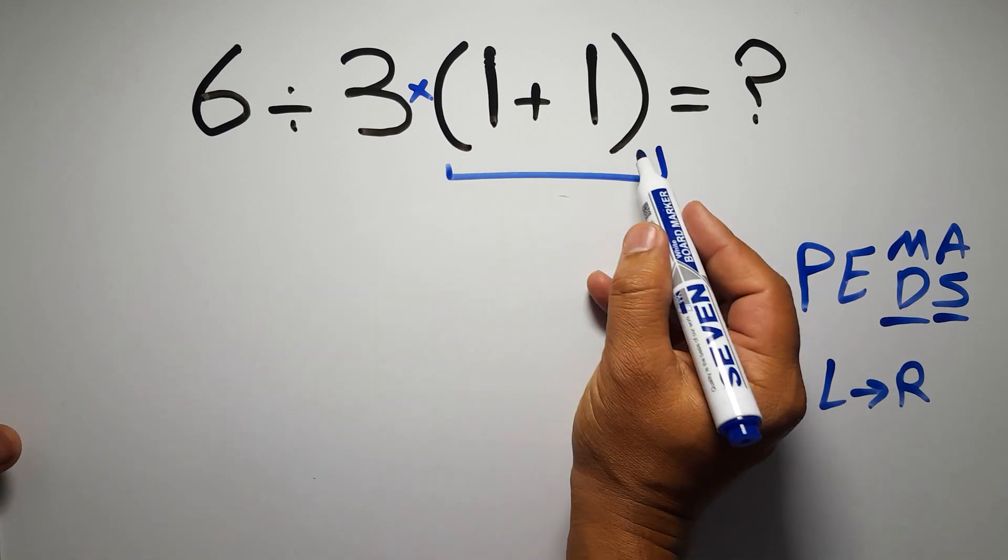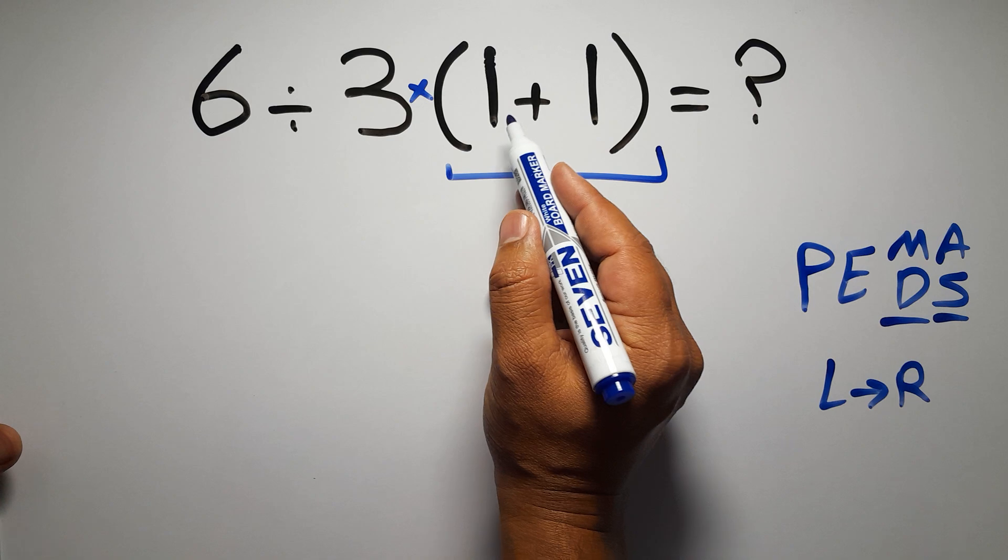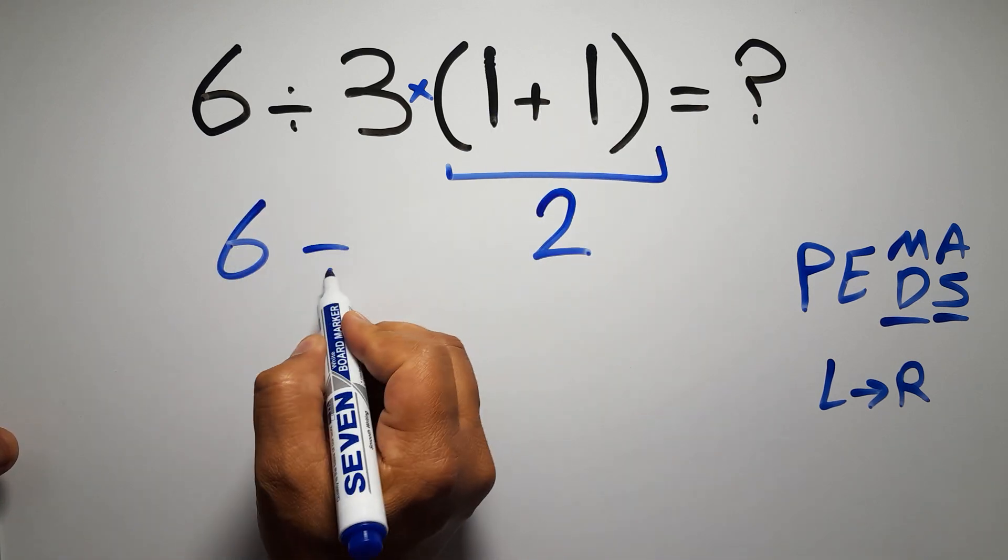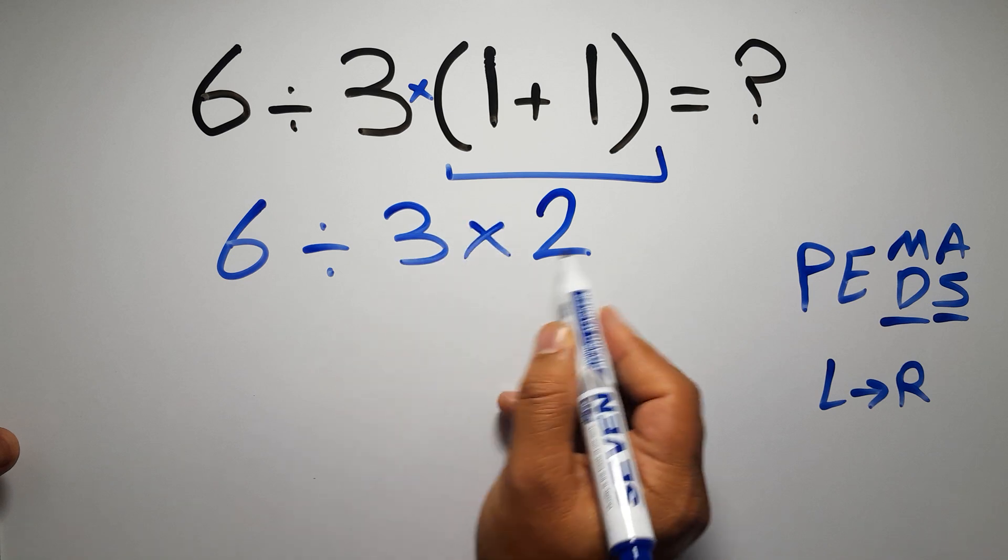So first, these parentheses. Inside these parentheses, we have 1 plus 1, which equals 2. So, 6 divided by 3 times 2.